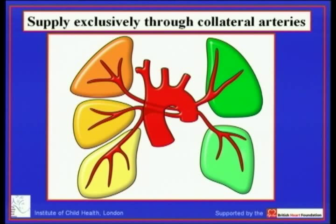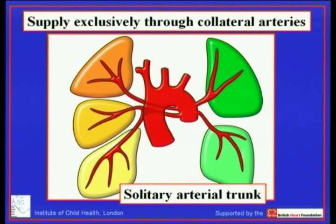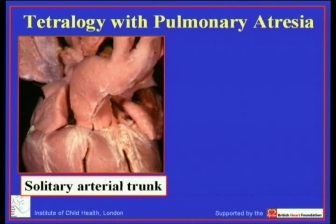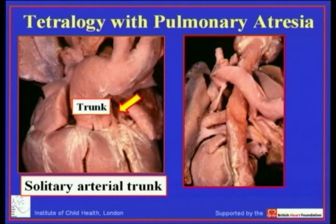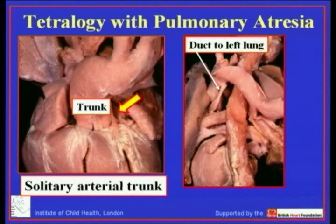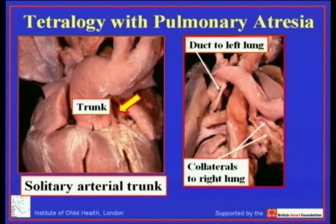We also need to consider cases in which intrapericardial pulmonary arteries are totally absent. In that setting, supply must be exclusively through collateral arteries, and the vessel leaving the base of the heart is best described as a solitary arterial trunk. Here is an example: an arterial trunk leaving the base of the heart with no evidence of intrapericardial arteries, discontinuous pulmonary arteries at the hilum, with those to the left lung fed by the arterial duct and arteries to the right lung coming through collateral vessels.